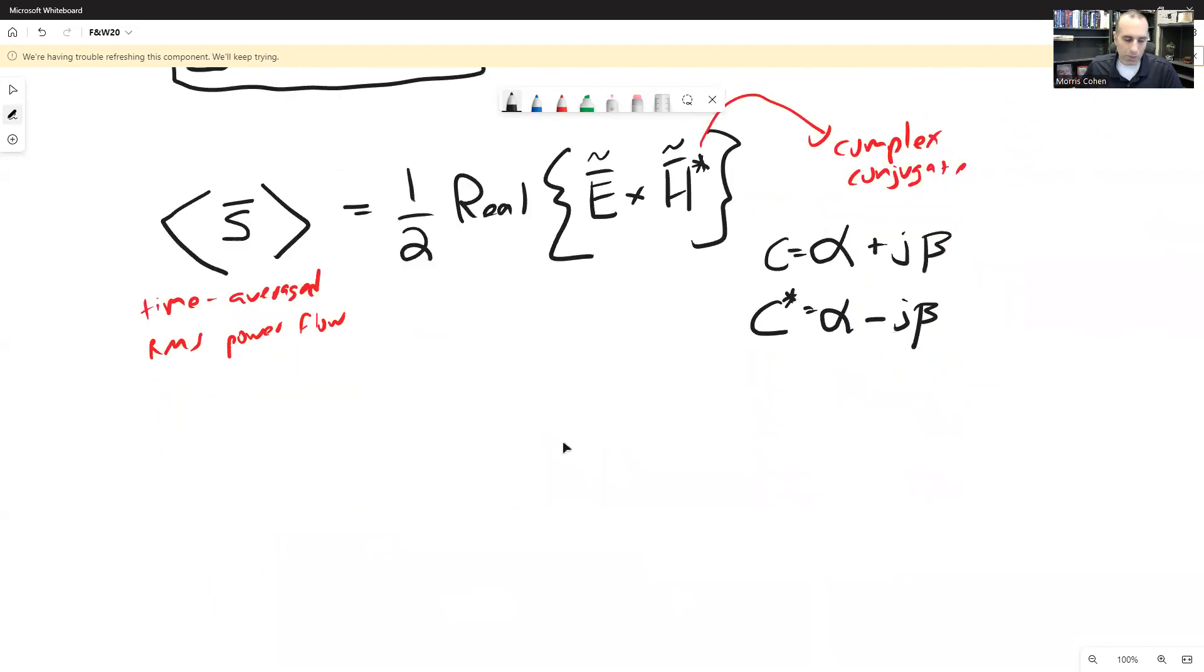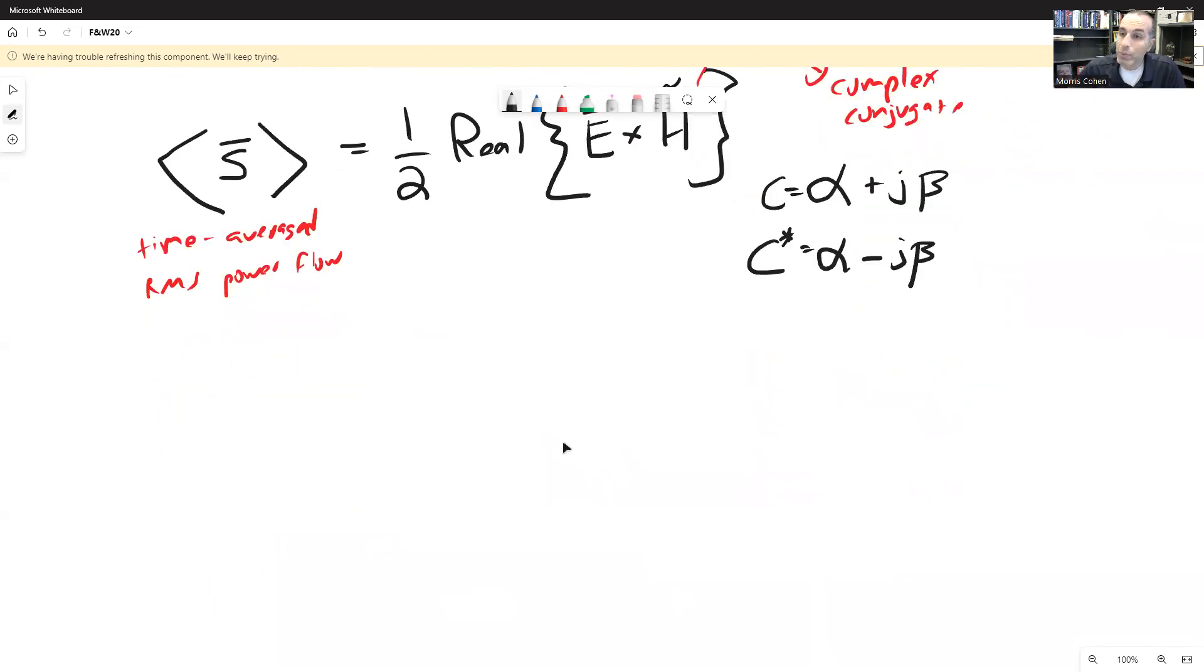All right. Now, we can do a little bit more with this because we also have a relationship between the electric field and the magnetic field. In particular, that the intensity of the electric field divided by the intensity of the magnetic field for a uniform plane wave equals eta, which also equals the square root of mu divided by epsilon.